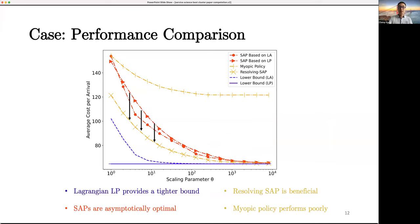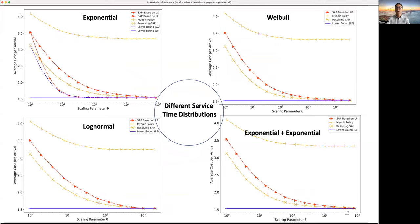The MACP policy, on the contrary, performs poorly. We also check our results under general distributions of service time. For example, the Weibull distribution, the log-normal distribution, and also the sum of two exponential distributions, all showing the same asymptotic convergence results.